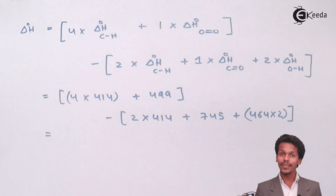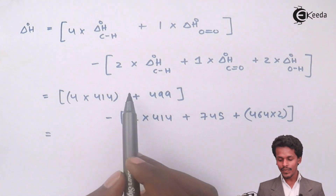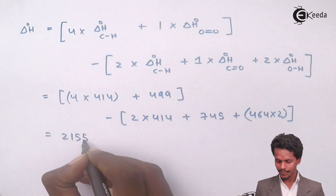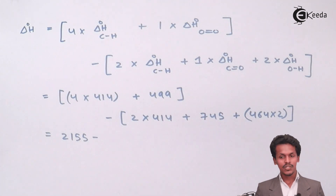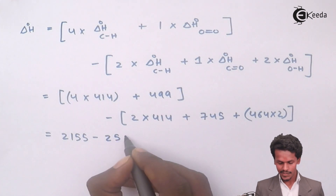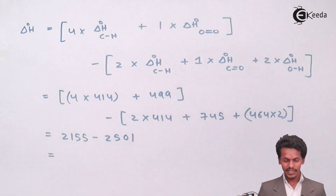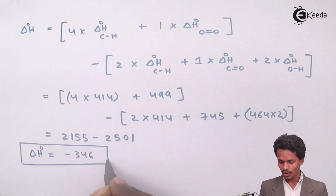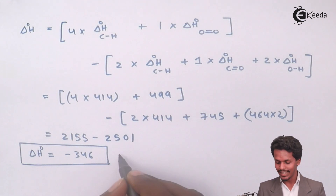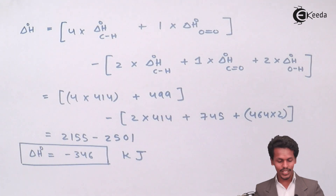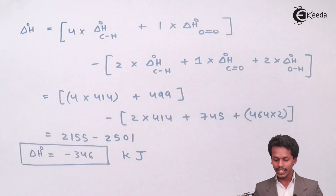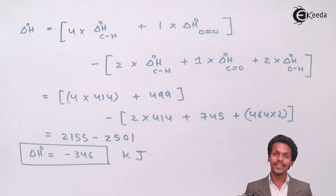Calculating the result: 2155 minus 2501 gives minus 346. So the overall heat of reaction is minus 346 kilojoules. This is the value calculated based on the bond enthalpies provided, and this is how we solve this type of numerical.